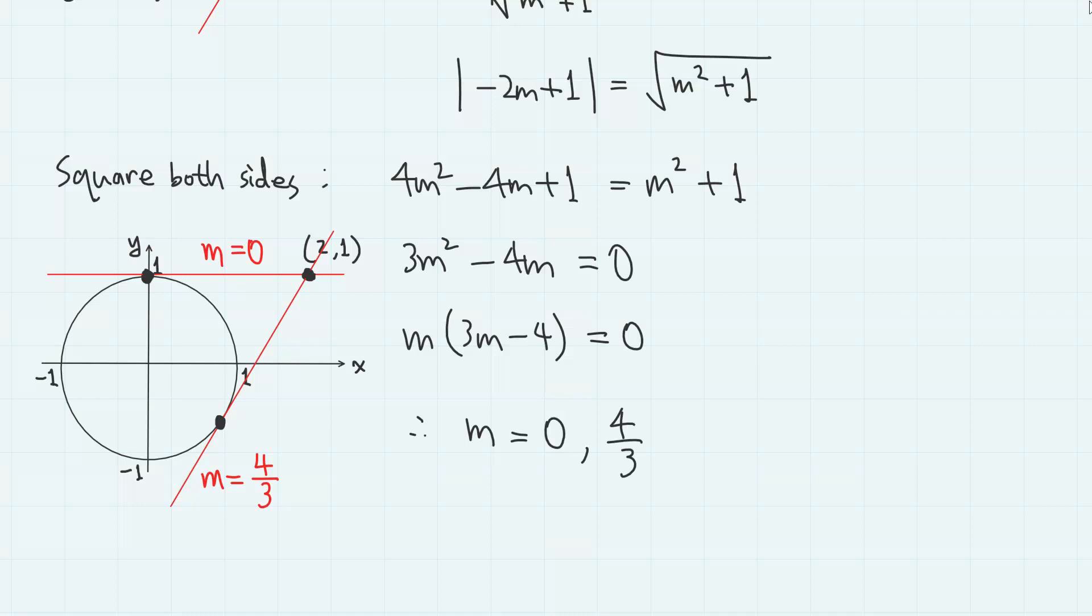These are the slopes for two cases where the circle and the line are tangent. Therefore, for an arbitrary point on a unit circle, meaning that for an arbitrary value of theta,